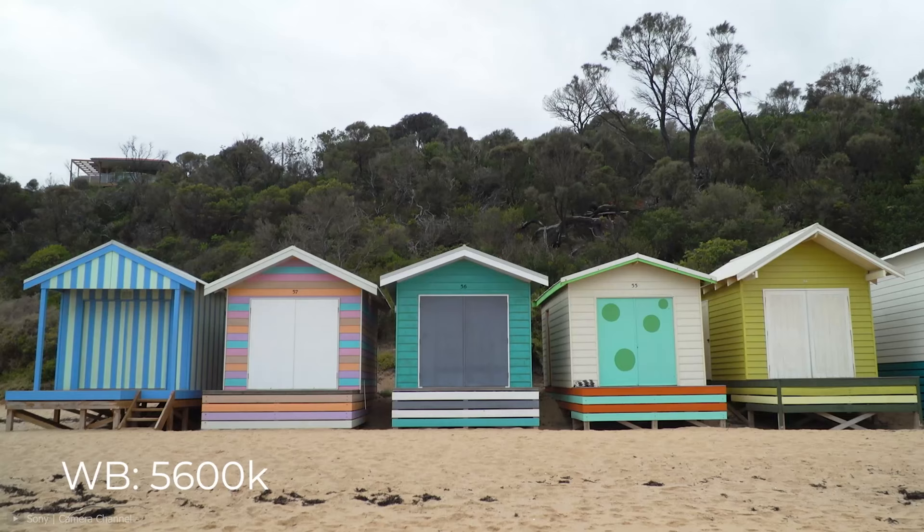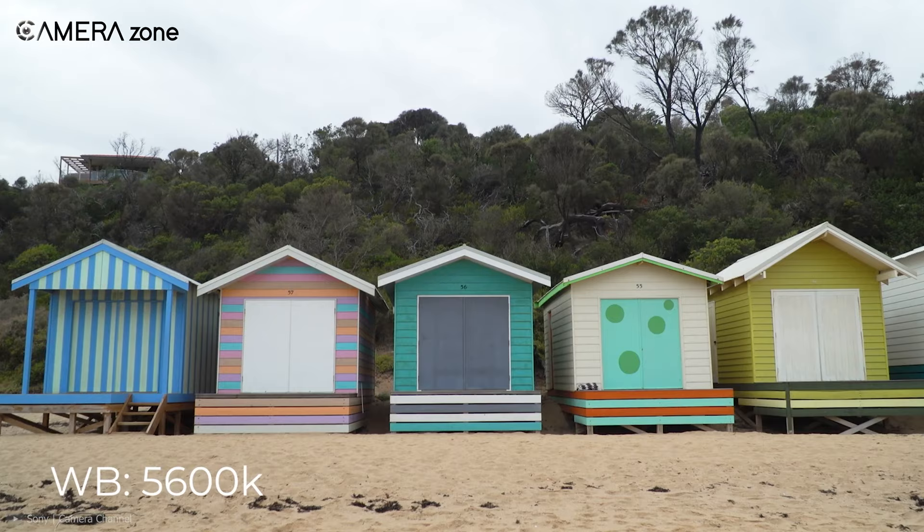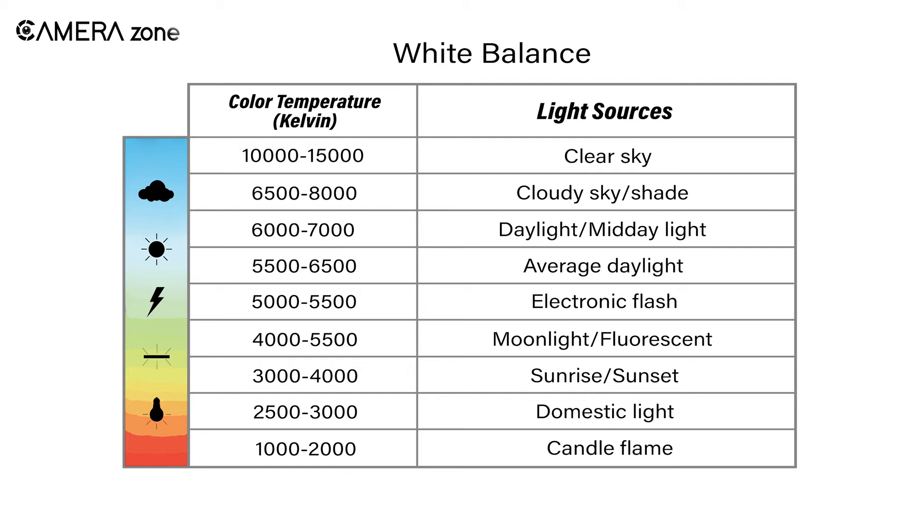For example, daylight, which is more than 5000 Kelvin, is similar to the color temperature of a sunny day. For your better understanding, here is a chart of some frequently used white balance presets with their Kelvin values.